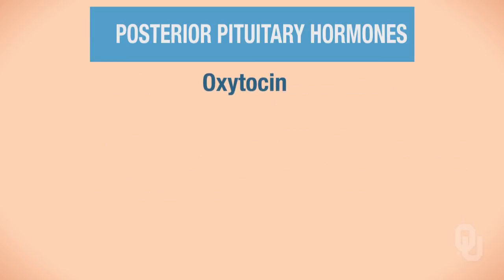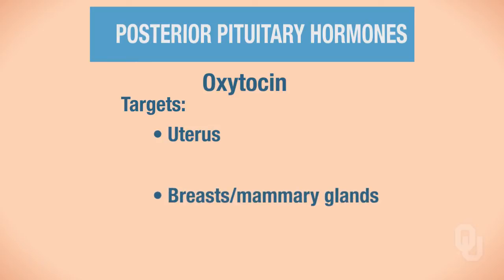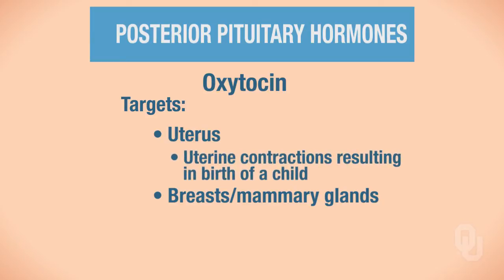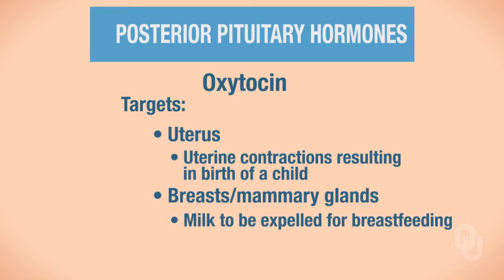In terms of oxytocin's target and function, it targets a couple of different tissues: the uterus and the breasts, or mammary glands. When oxytocin targets the uterus and binds to receptors there, it causes uterine contraction that results in the birth of a child. When oxytocin binds to cells of the mammary glands, it causes milk to be expelled from those glands.